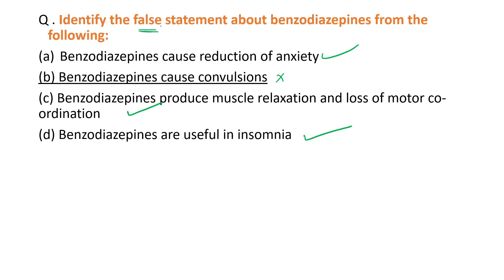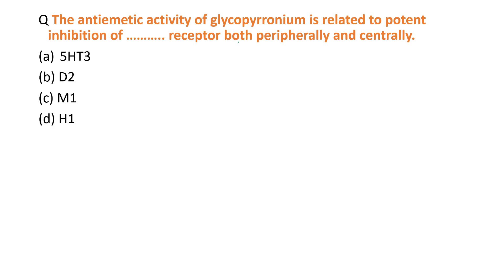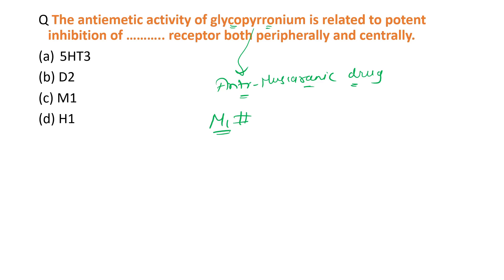The next question: the anti-emetic drug activity of glycopyrronium is related to potent inhibition of which receptor, both peripherally and centrally? Glycopyrronium is an anti-muscarinic drug. It blocks the M1 receptor. So the answer is M1.